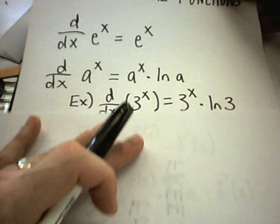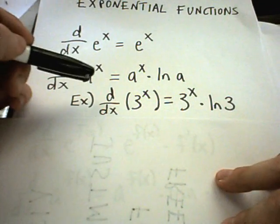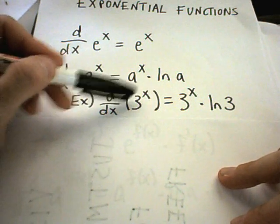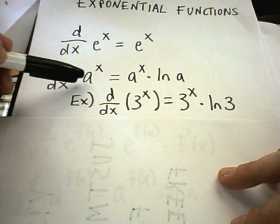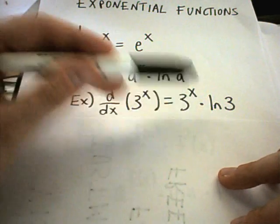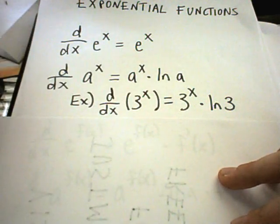So an example of a simple example of the second formula. If you take the derivative of three to the x, you've got a number to a variable power. Well, you just get the number to the power times the natural logarithm of the number.